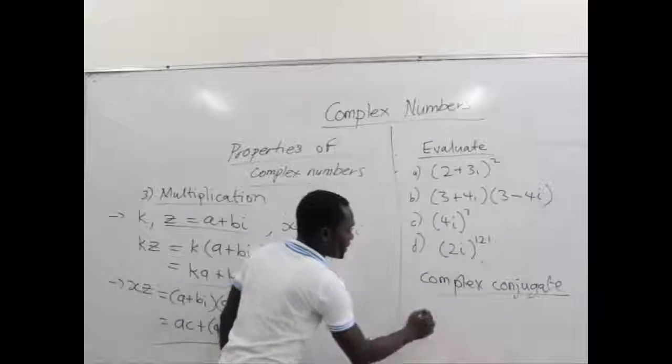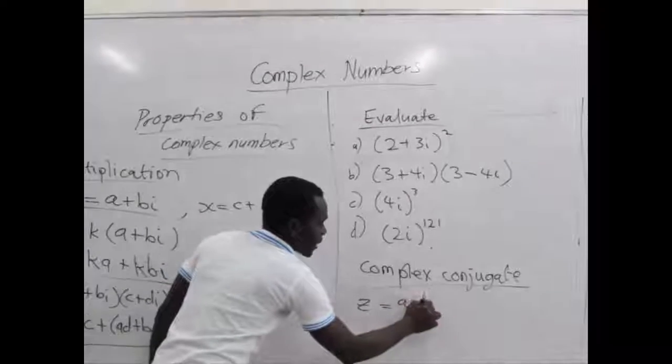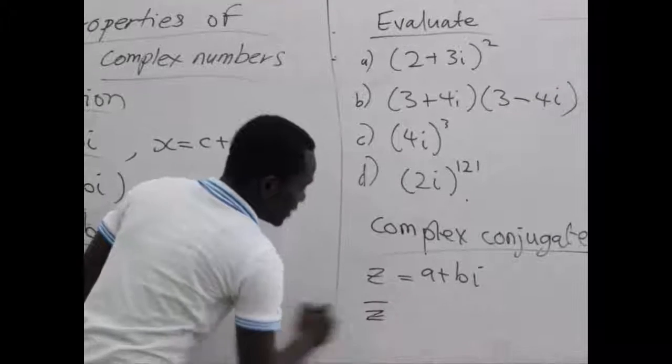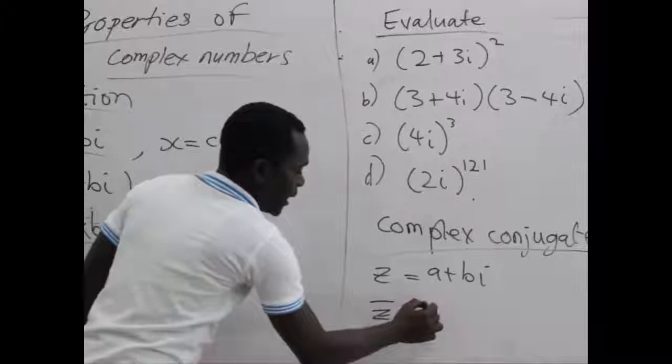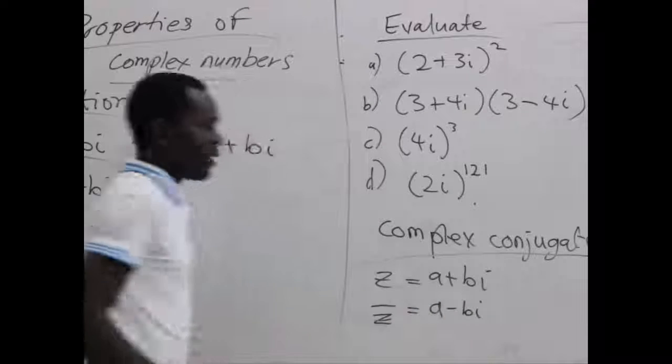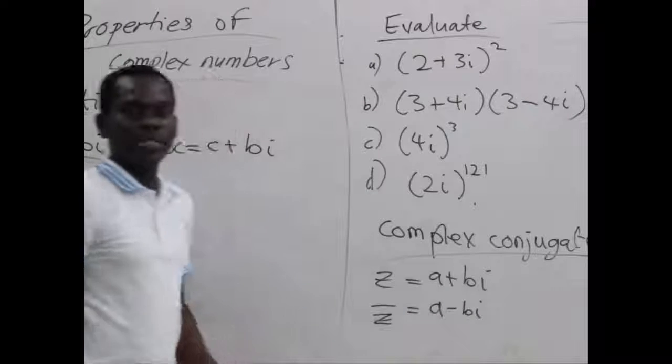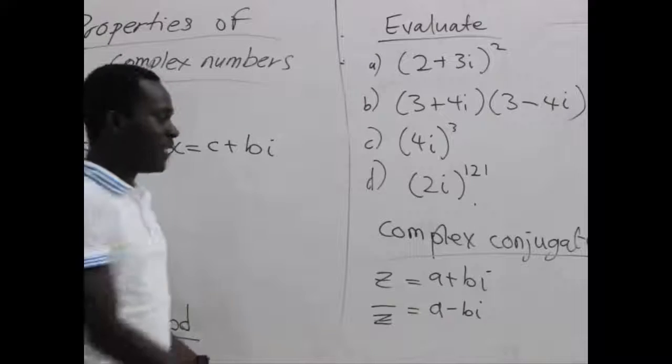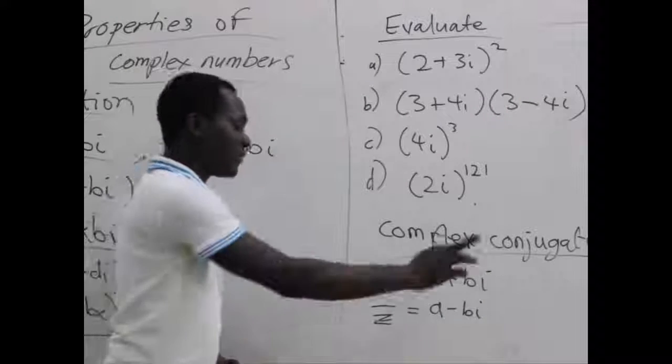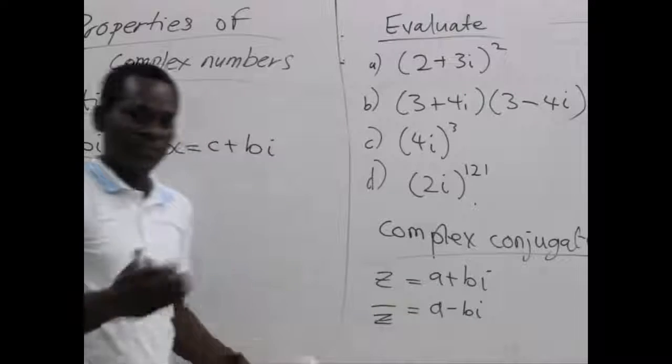When you have a complex number, let's say z which is a plus bi, its conjugate which is written as bar z is given as a minus bi. All you need to do is to negate the imaginary part of the complex number. If it's already a positive one, its conjugate becomes a negative. If it's already negative, the conjugate becomes a positive in that order.